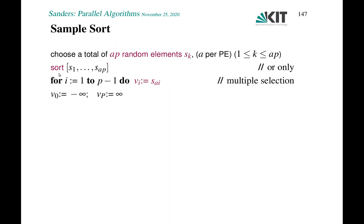We don't actually have to sort the sample — we need multiple selection: extracting elements of specified ranks from an unsorted input. If a is very large, this can be done more efficiently than sorting, but in practice we keep the sample small enough that this doesn't matter. In particular, we use a fast sorting algorithm for this step.